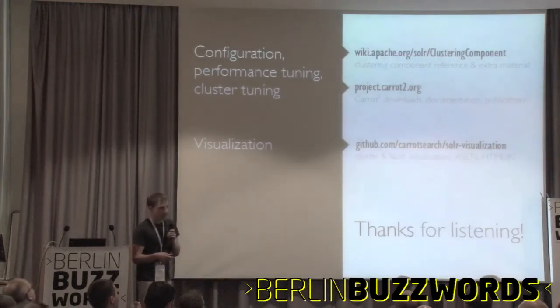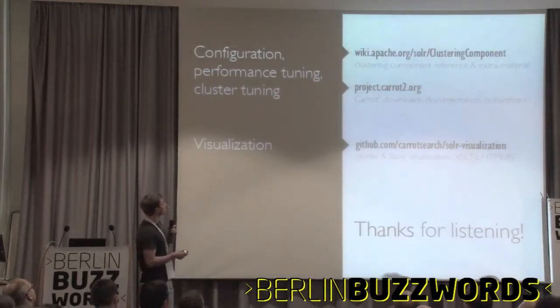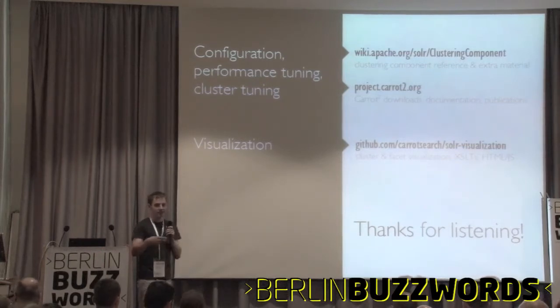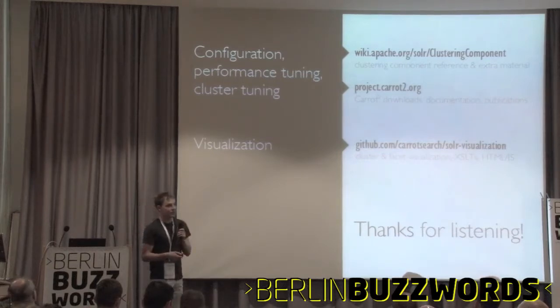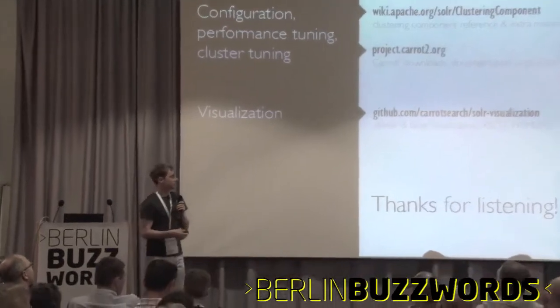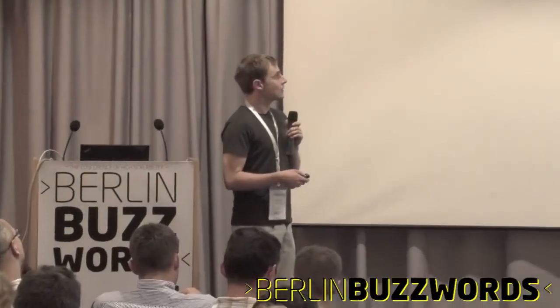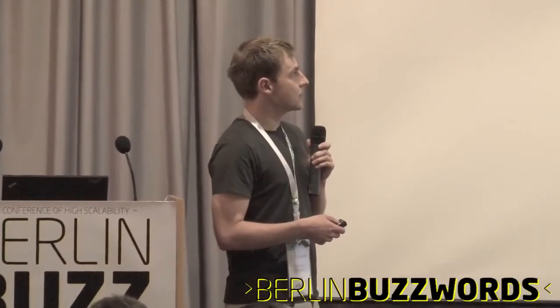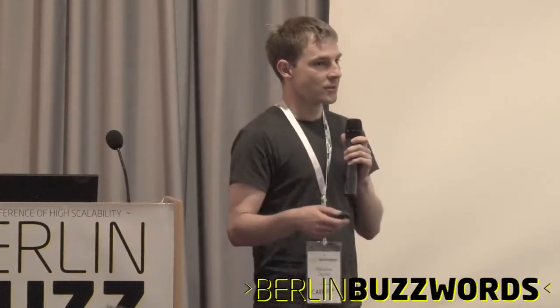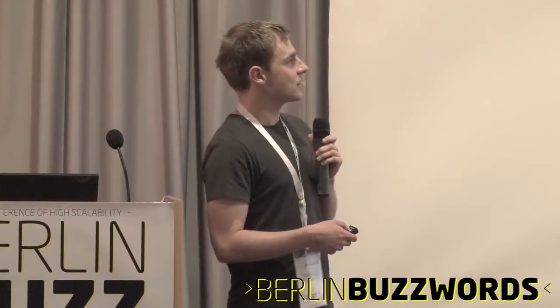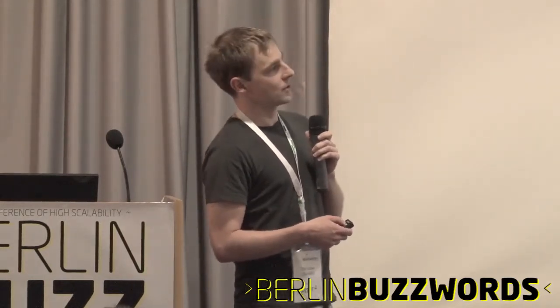To summarize: clustering is pretty simple to configure and comes out of the box with Solr. There's a clustering component wiki with all the reference information and extra material. For Carrot², check the project webpage — there are publications about the algorithms and lots of PDFs. For the visualization, there's the GitHub project. That's about it — unless there are questions, have a nice time.